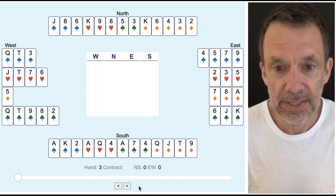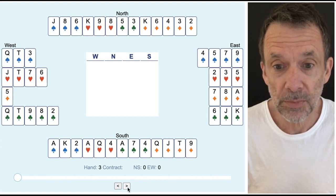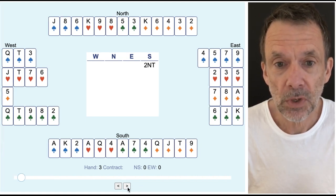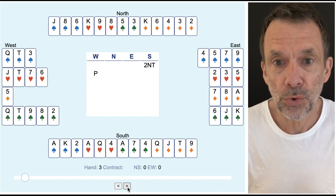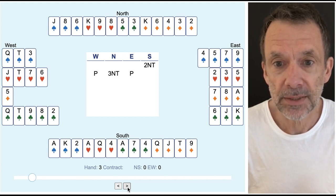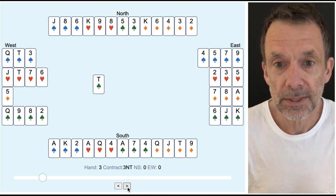I'm the dealer here in the south seat with 10, 17, 20 points. I'm going to open two no trumps. West passes, north bids three no trumps and east passes. Pass, pass, pass.